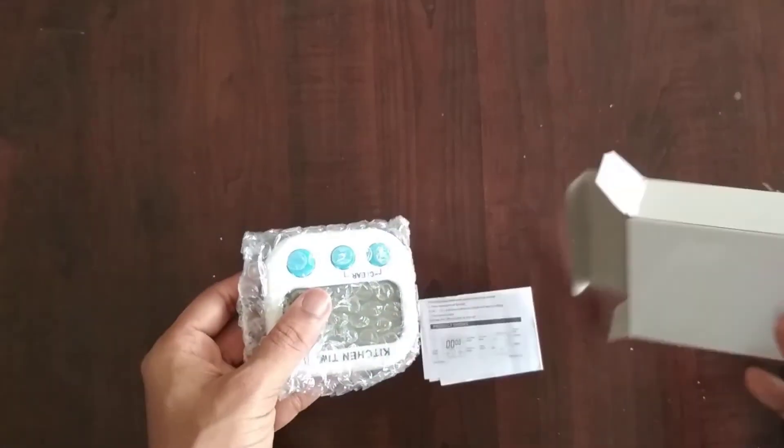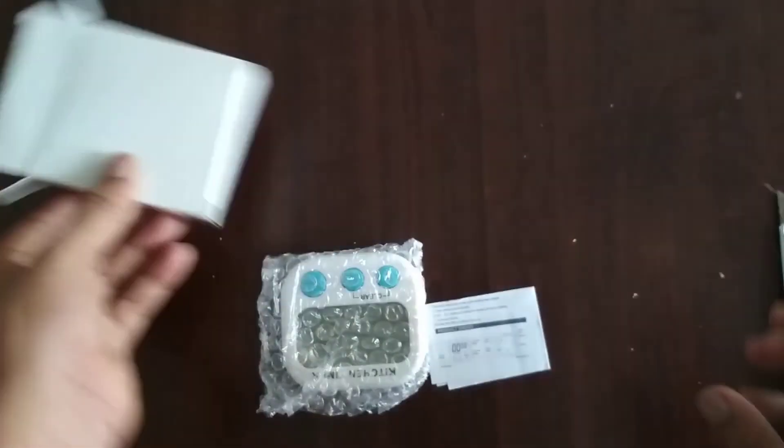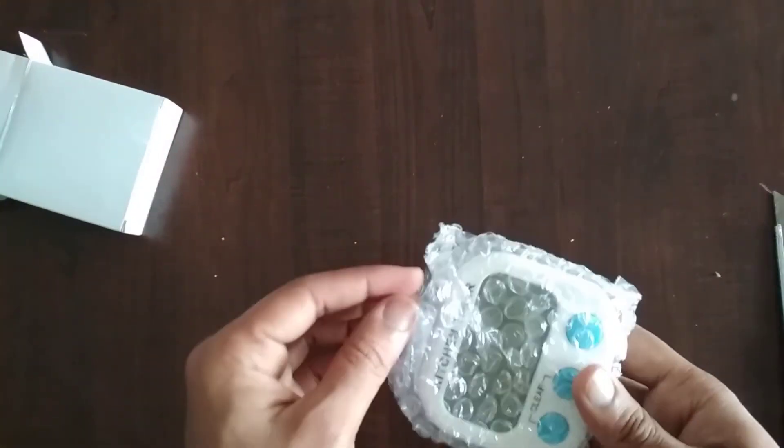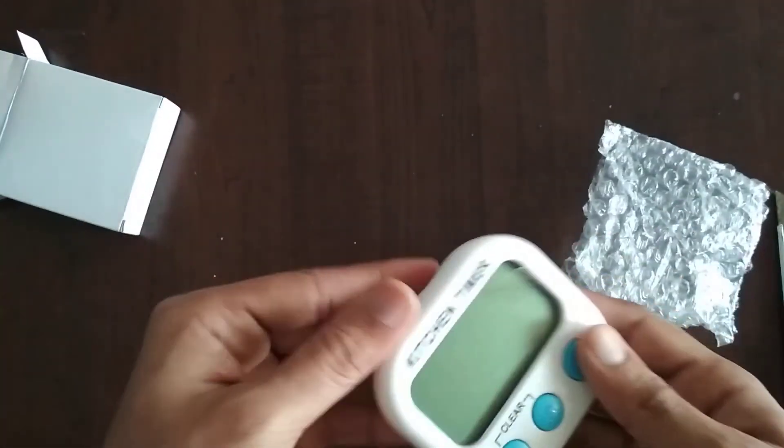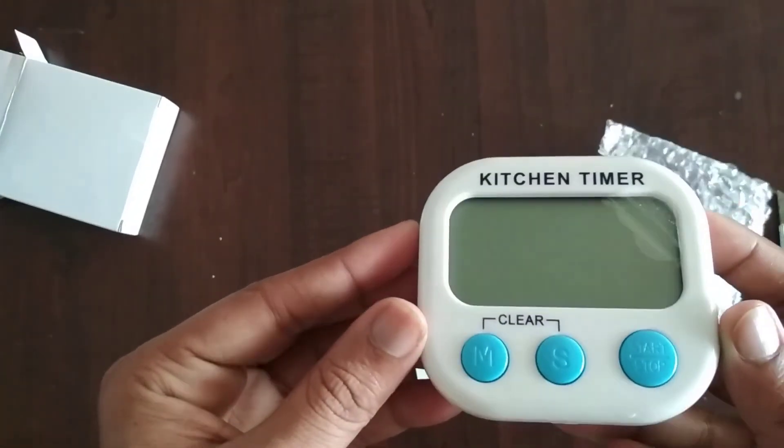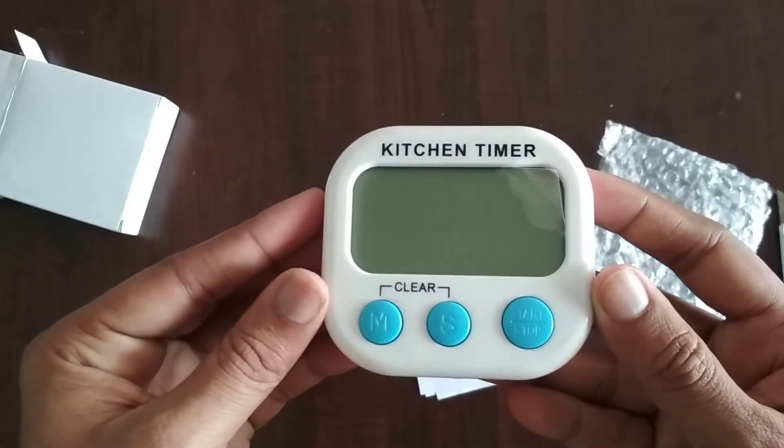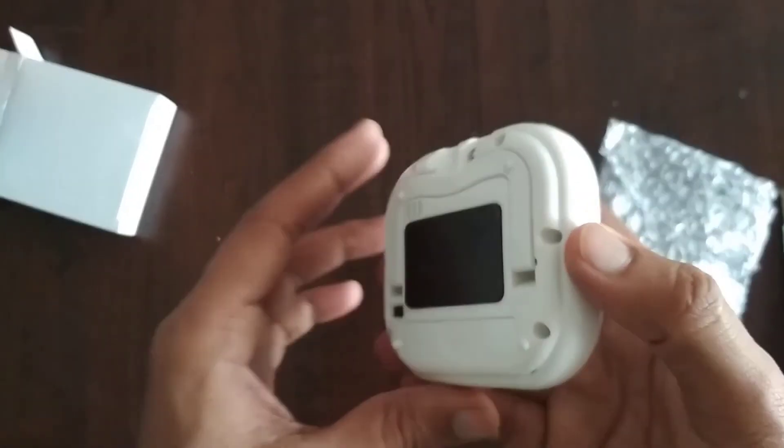This practical set of five digital kitchen timers offers an attractive design and some very interesting features. To name a few, the time range goes up to 99 minutes and 59 seconds, a large and easy to read display, as well as an alarm which is loud enough for you to hear in another room.